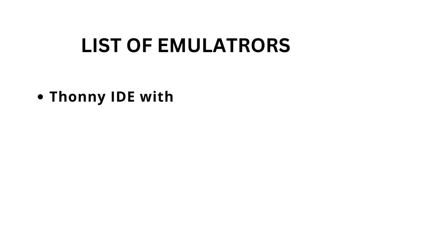The fourth simulator option is Thonny IDE with Mock GPIO. Thonny is a Python IDE for beginners that offers a feature called Mock GPIO to simulate GPIO input and output for Raspberry Pi projects. It also allows you to test your code without actual hardware.